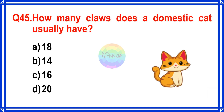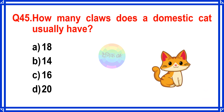How many claws does a domestic cat usually have? The correct answer is Option A. 18.